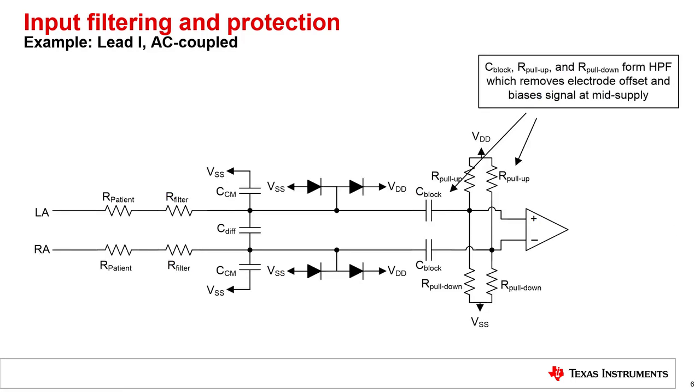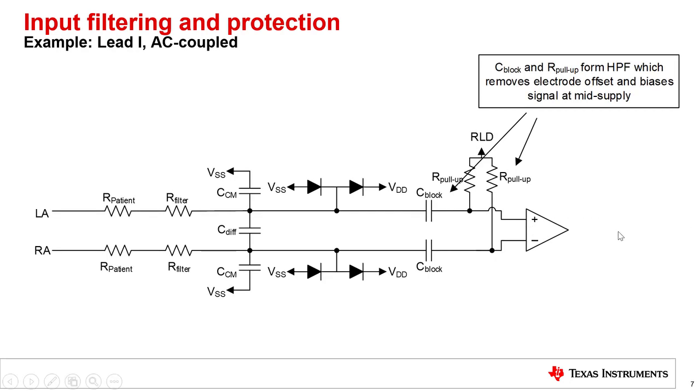Some applications may prefer to not use the RLD electrode in order to reduce the number of connections and to save on cost. In this case, the input to the INA will need to be AC coupled using the series capacitors C block. The input signal path will still look very similar to the DC coupled version. The exception is that a resistor divider between the supply rails is needed to set the DC common mode voltage, typically to mid-supply. Alternatively, a single pull-up resistor to an available mid-supply rail can also be used. The combination of these resistors and C block form a high-pass filter that will block the floating bias voltage of the body. The cutoff frequency for the high-pass filters can be as low as 0.05 hertz while providing the ECG signal content.